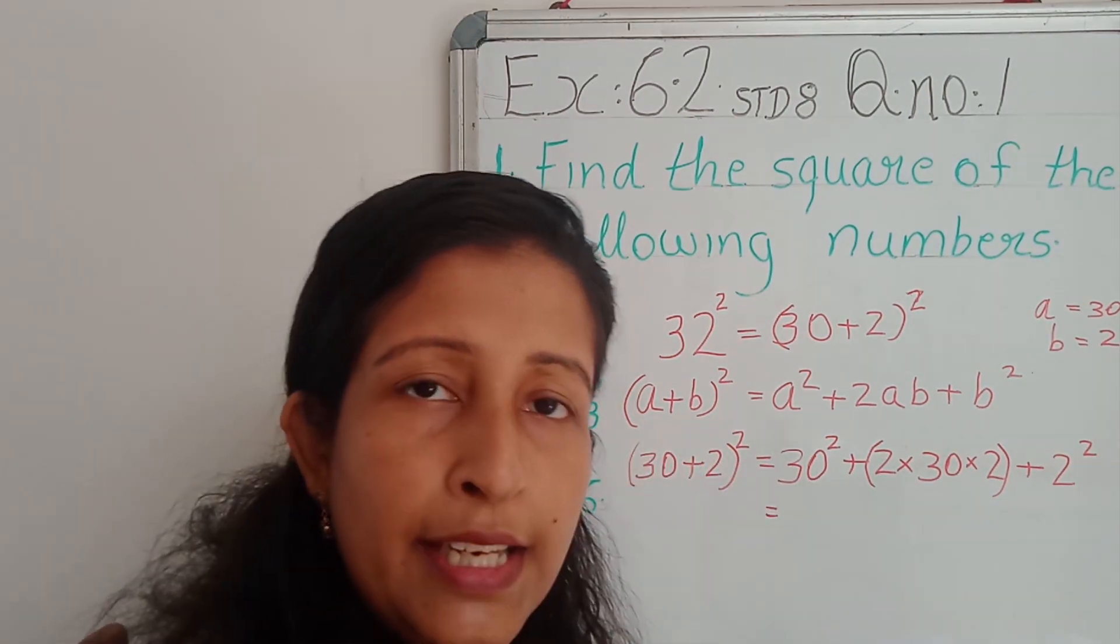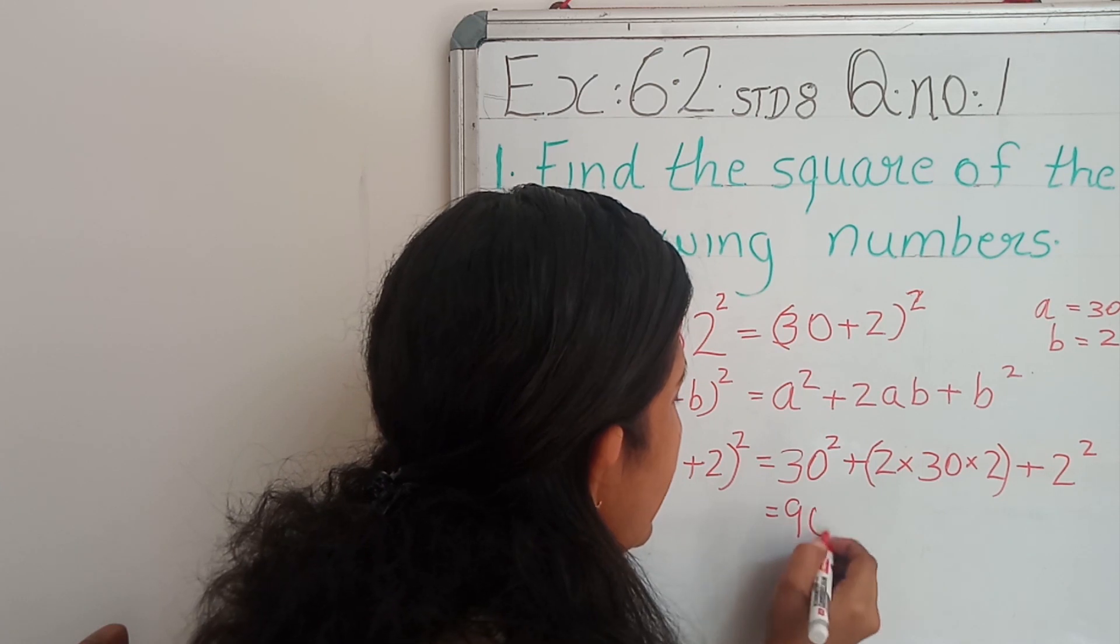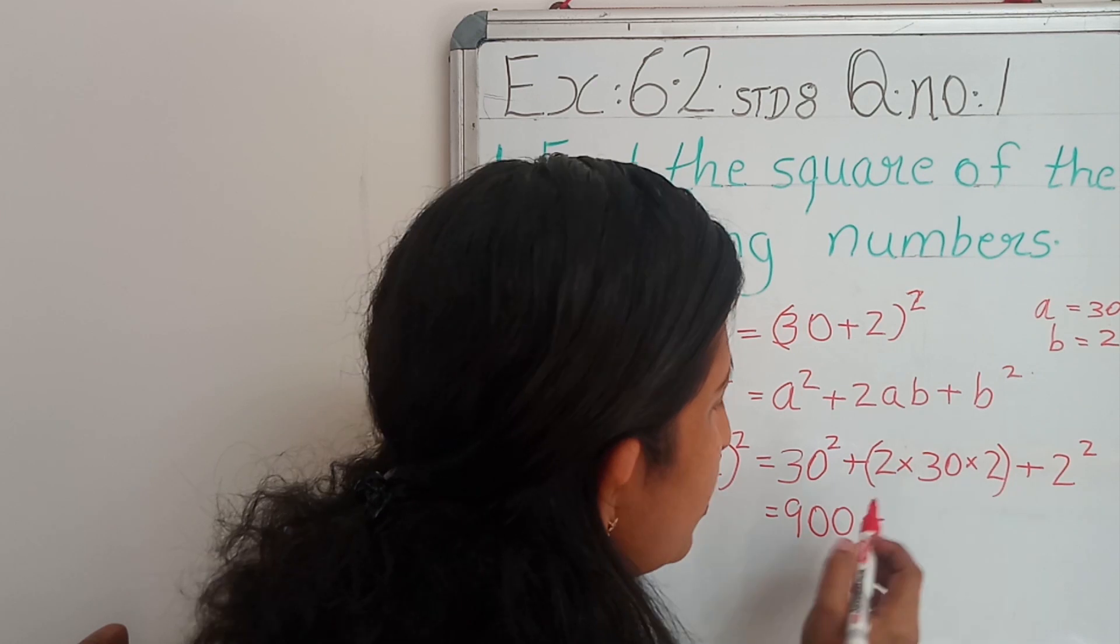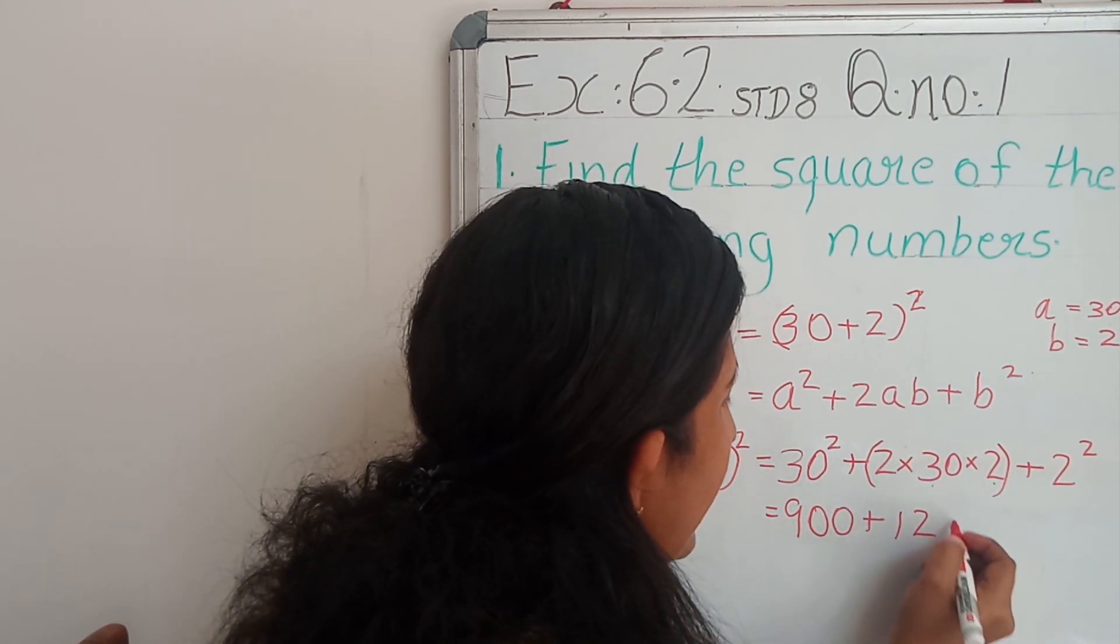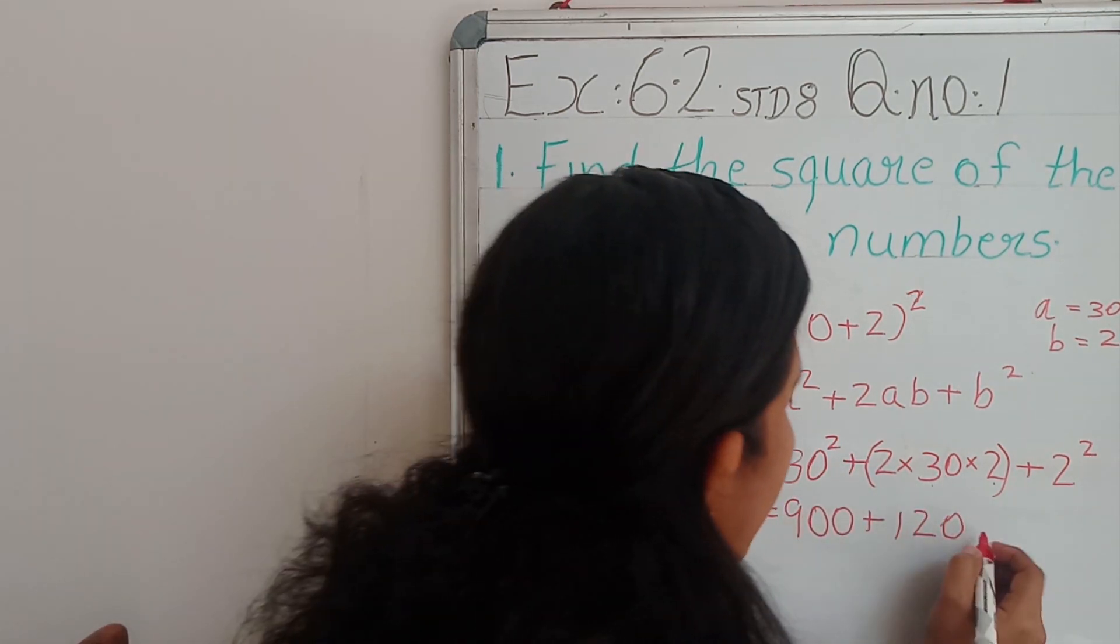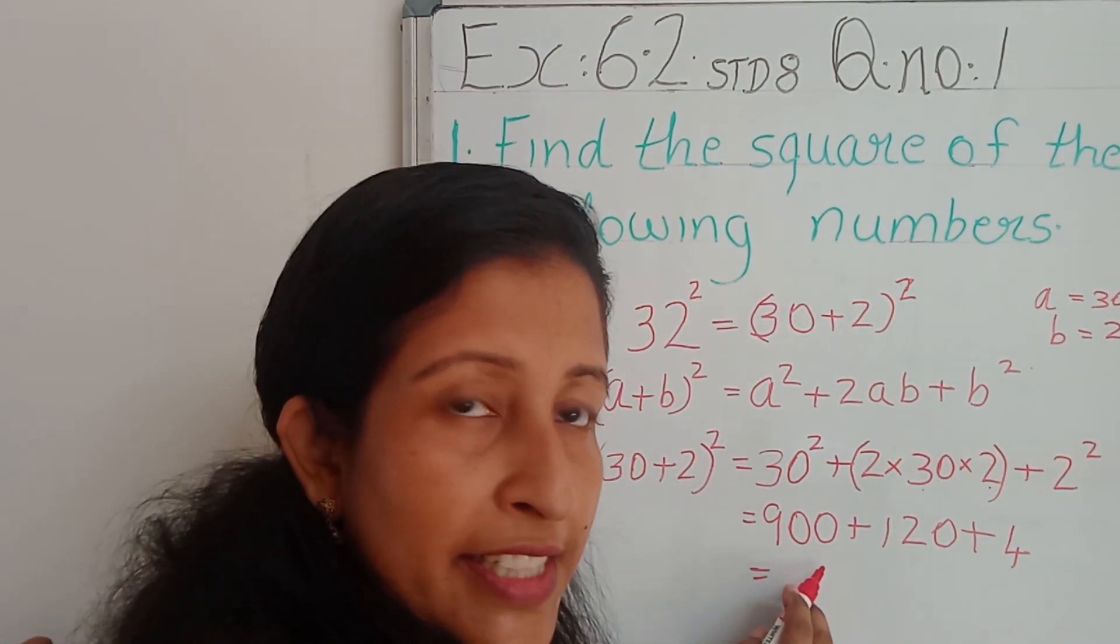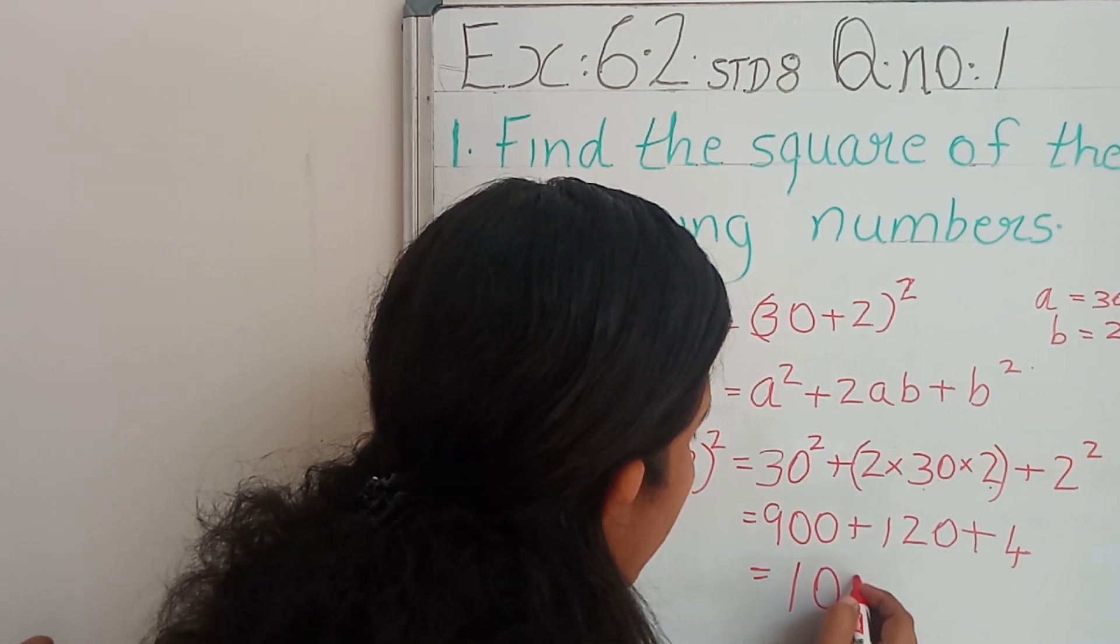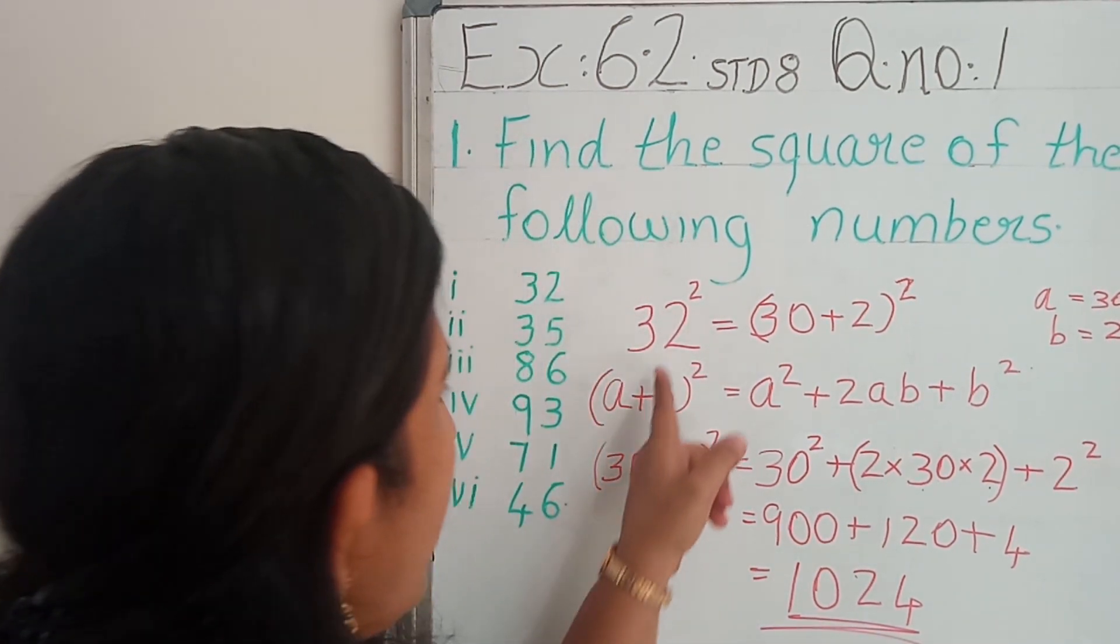Equal to 30 square, 30 into 30, 3 into 3, 9. Then add 2 zeros plus 2 into 30 into 2, 2 into 3, 6, 6 into 2, 12. Then add 1, 0, 0 we got from 30 plus 4. Then adding 900, 120 and 4 we will be getting 1024. So, this is a square of 32.